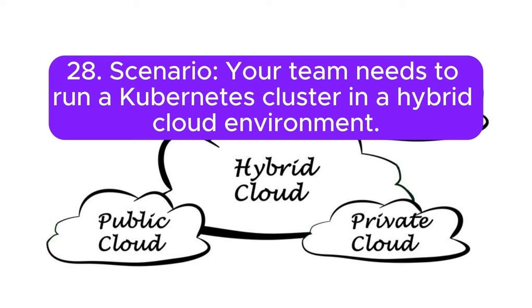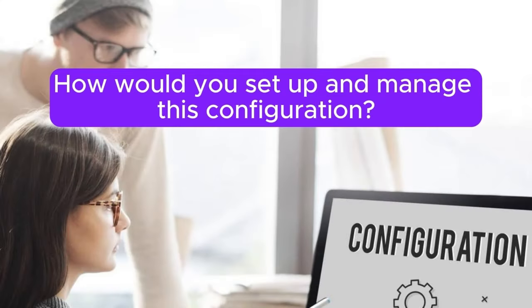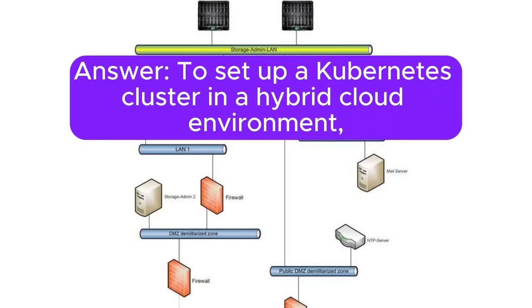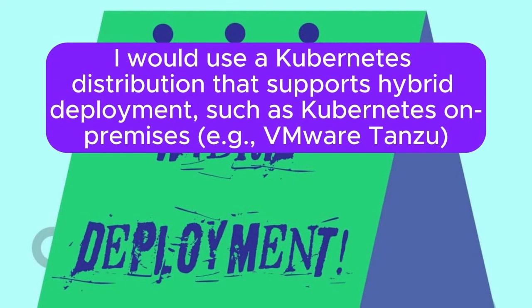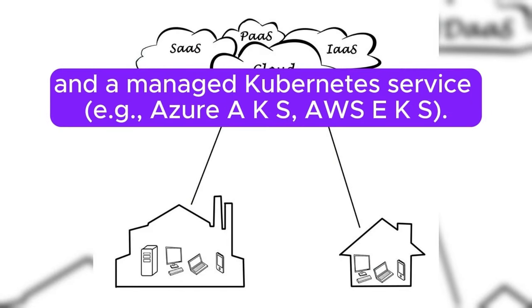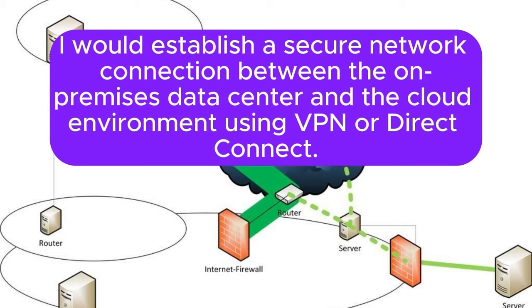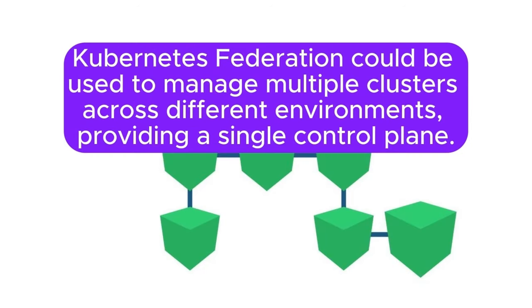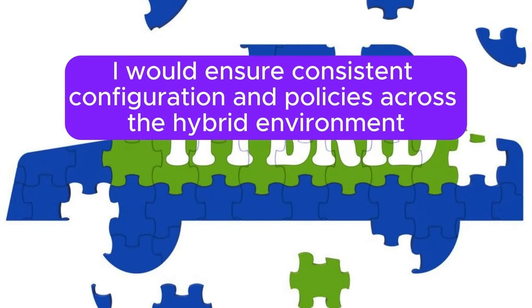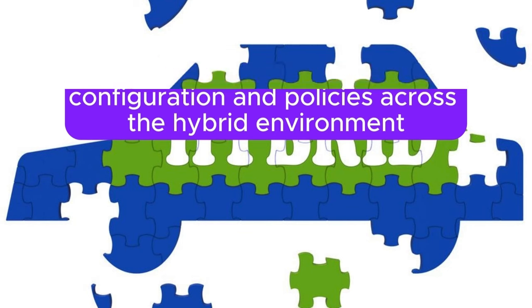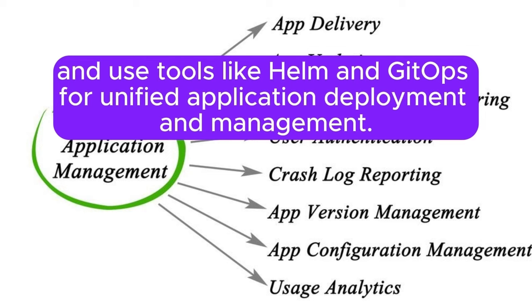Scenario 28: Your team needs to run a Kubernetes cluster in a hybrid cloud environment. How would you set up and manage this configuration? Answer: To set up a Kubernetes cluster in a hybrid cloud environment, I would use a Kubernetes distribution that supports hybrid deployment, such as VMware Tanzu on-premises and a managed Kubernetes service like Azure AKS or AWS EKS. I would establish a secure network connection between the on-premises data center and the cloud environment using VPN or Direct Connect. Kubernetes federation could be used to manage multiple clusters across different environments, providing a single control plane. I would ensure consistent configuration and policies, using tools like Helm and GitOps for unified application deployment.